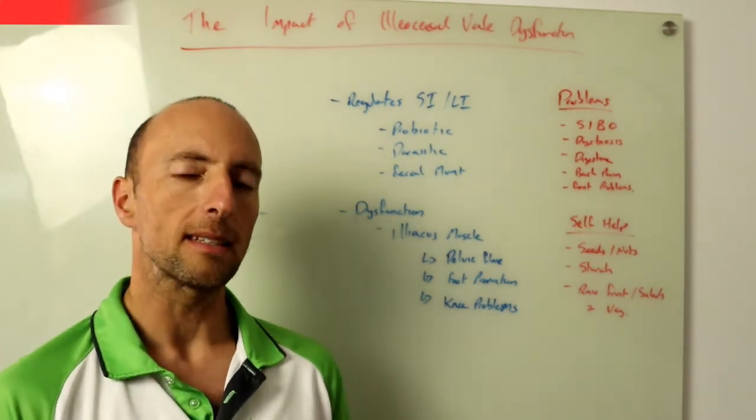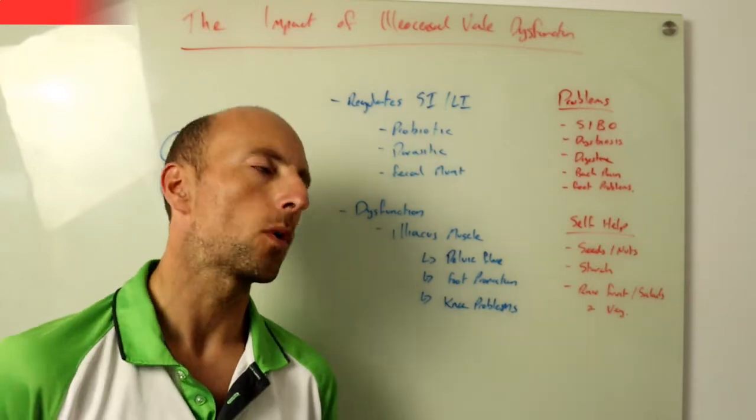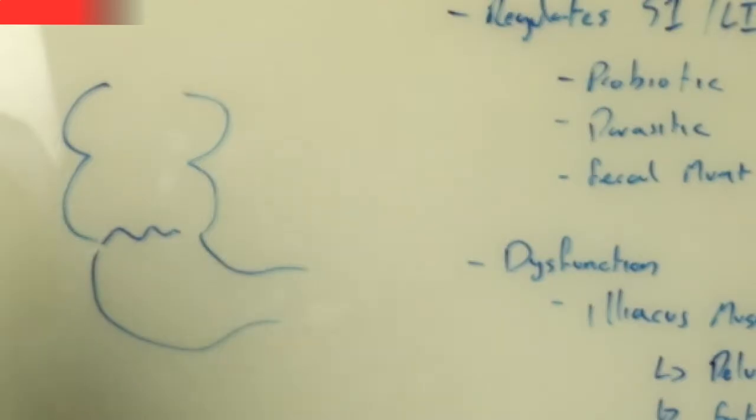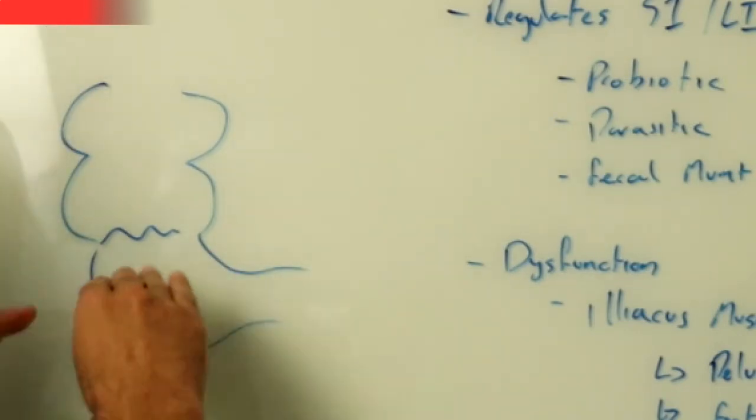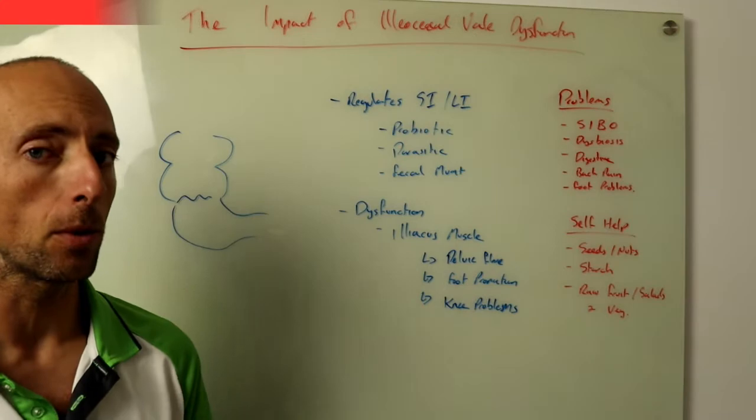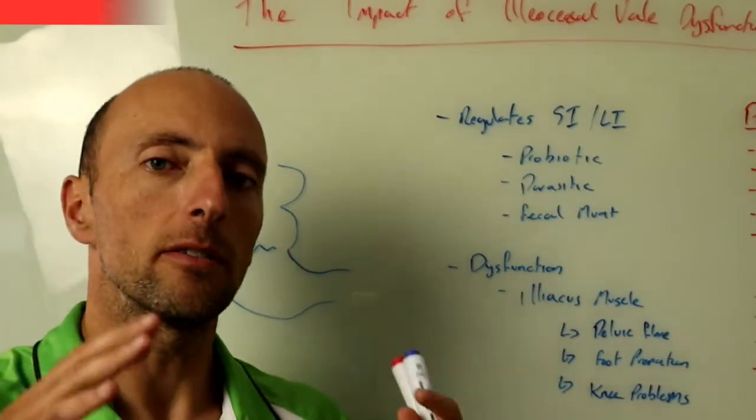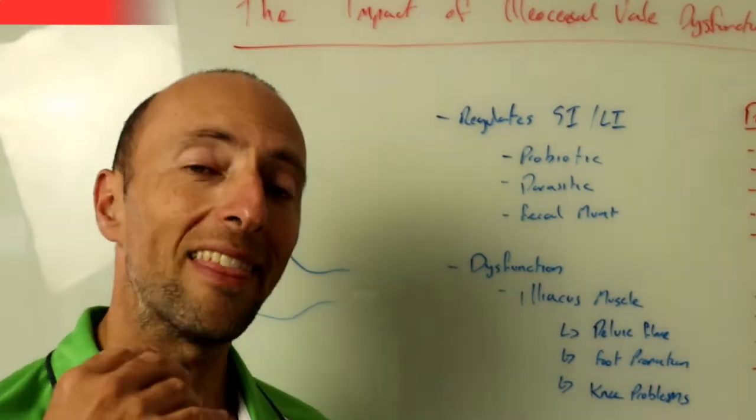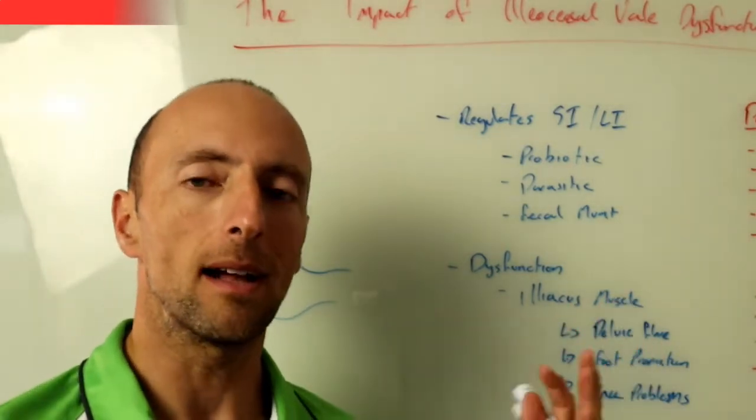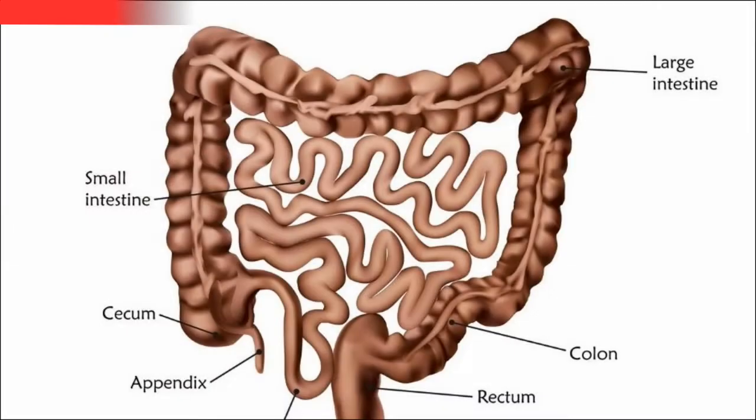All right so let's talk about this thing called the ileocecal valve and let's start with what it actually is. Between our small and our large intestine we have a barrier that needs to be formed and this is a really important barrier. There's a whole lot of good and bad things that live in our intestinal tract and they are different between our small bowel and our large bowel, our small intestine and our large intestine and they do different things.